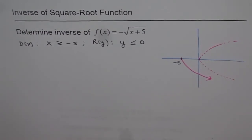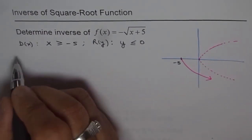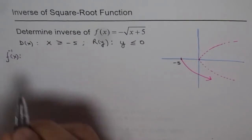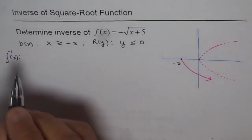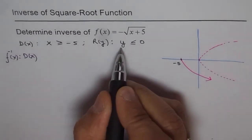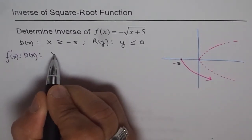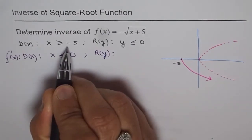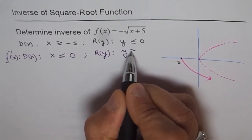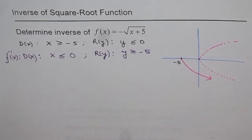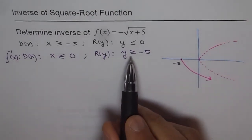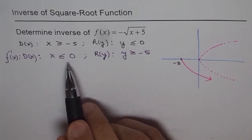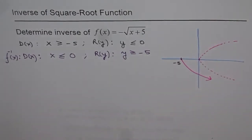Now let's find the domain and range for the inverse of the function. For f⁻¹(x), the domain and range swap. So the domain becomes x ≤ 0, and the range becomes y ≥ -5. So y is greater than or equal to -5 and x is less than or equal to 0. That is what the inverse of this function is going to look like.